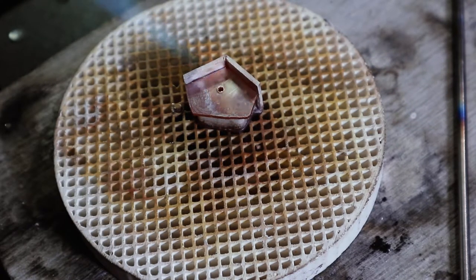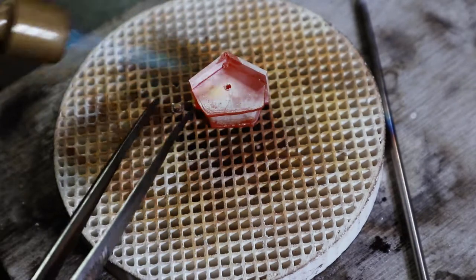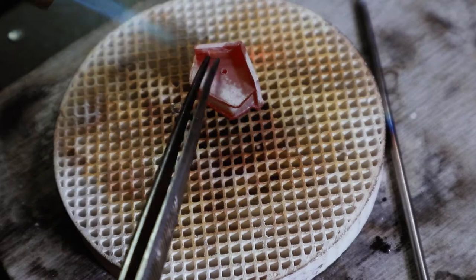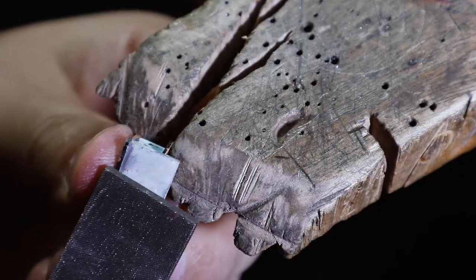I float some solder on the back, and now I'm sweat soldering it in location while adding some extra beads of solder up at the top to give it a good connection. I don't want any gaps in the solder.